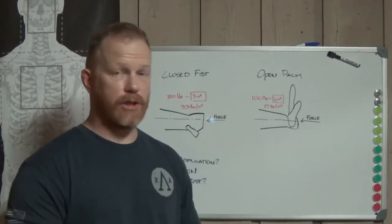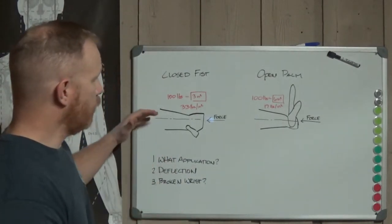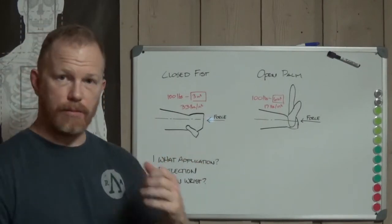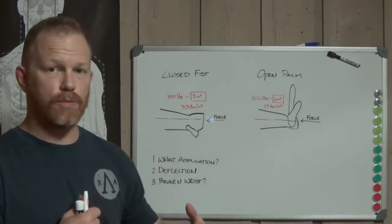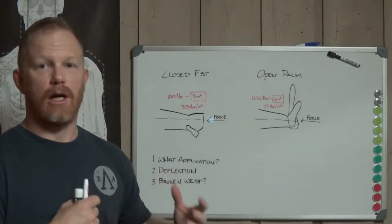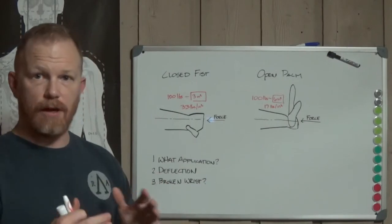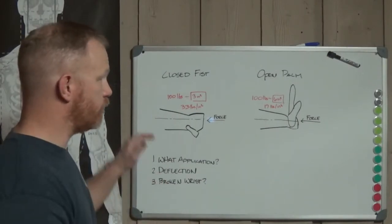So we're going to look at a couple of those things. We're going to look at those from an engineering perspective. What are the benefits, the pros and the cons for each, and then how does that translate into a real world environment for the average civilian to be able to deliver strikes?